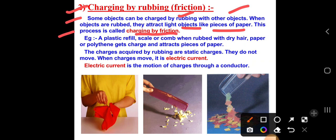What is charging by friction? This question can be asked for one mark. For example, a plastic refill — this is the refill that you put in the pen. By using a scale or comb when rubbed with dry hair, the plastic or polythene gets charged and attracts pieces of paper. In the second image you can see how this piece of paper is attracted towards the comb, which is made of plastic.